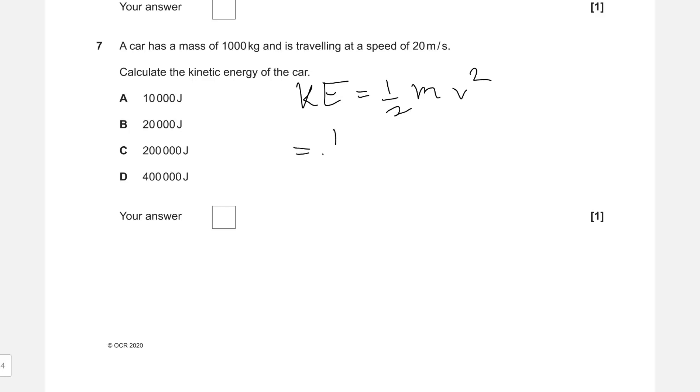This will be equal to one-half times 1000, because the mass is 1000, multiplied by the speed, which is just 20. Do not forget the square—that's one of the most common mistakes. Putting this into a calculator, we get around 200,000 joules. Correct answer is C.